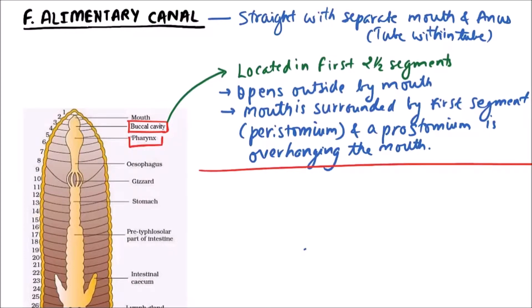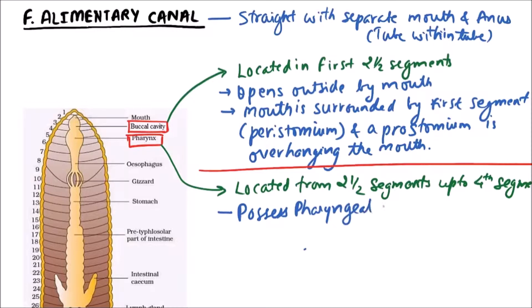The second structure is pharynx. Pharynx is located from two and a half segments up to the end of the fourth segment. It possesses pharyngeal glands that secrete mucus and proteolytic enzymes.